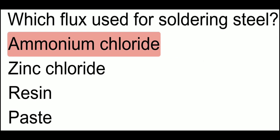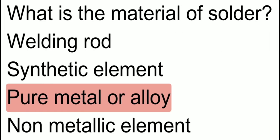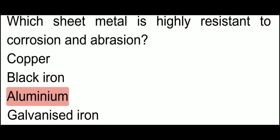Which flux is used for soldering steel? When soldering steel, the flux used is ammonium chloride. What is the material of solder? The material of solder is not a pure metal — it is an alloy made from two materials.